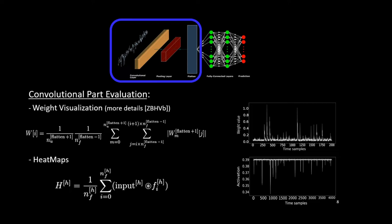Even if the weight visualization is a useful tool, we still cannot understand which features are selected by each filter. One solution is to plot the heat maps. The heat maps plot the convolution operation between an input and each filter, such that we can visualize the activation induced by each filter. This can be useful to adapt a network according to how the features are selected. These tools — the weight visualization and the heat maps — are useful to evaluate how the convolutional parameters affect the point of interest detection. To deeply explain our methodology, I need to give a little background on how the convolutional part works.